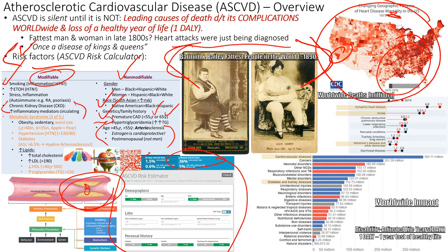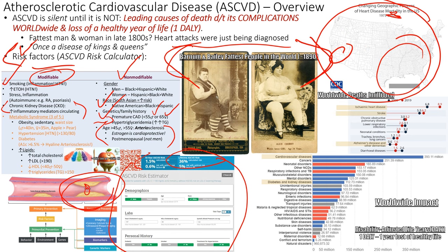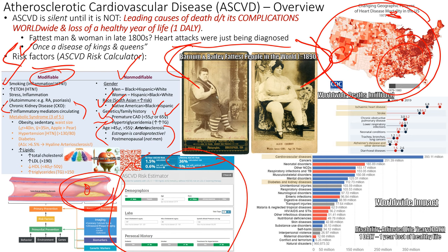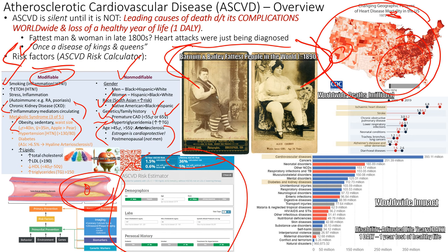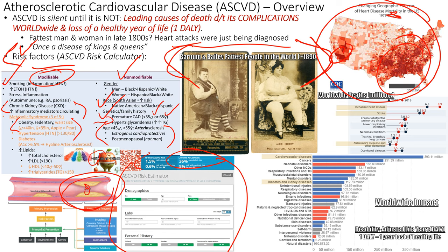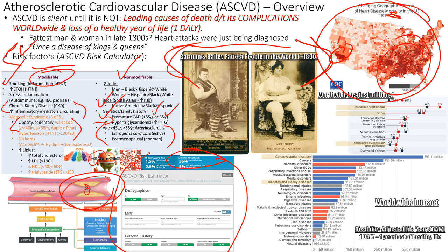CKD is a modifiable risk factor for ASCVD — we need to prevent its progression. Stage three is the point of no return for kidney recovery. Metabolic syndrome is also a significant risk factor. Men with a waist greater than 40 inches and women greater than 35 inches are at risk. Having three of the five metabolic syndrome criteria greatly increases ASCVD risk.